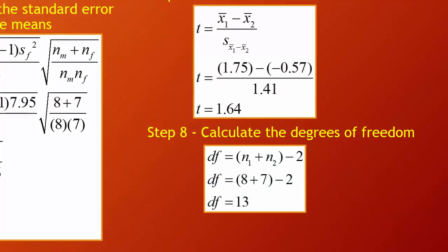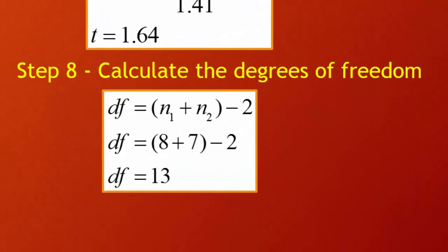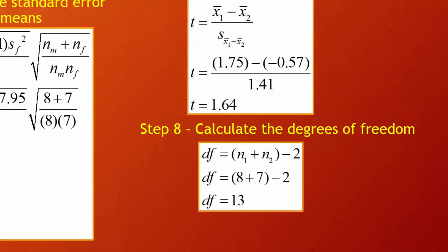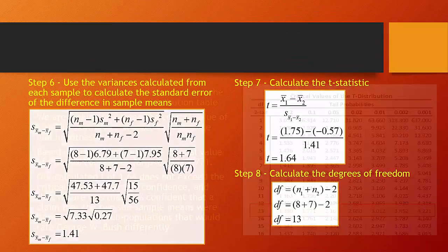In our eighth step, we calculate degrees of freedom, which is the first sample size plus the second sample size minus 2: 8 plus 7 minus 2 gives us 13 degrees of freedom.